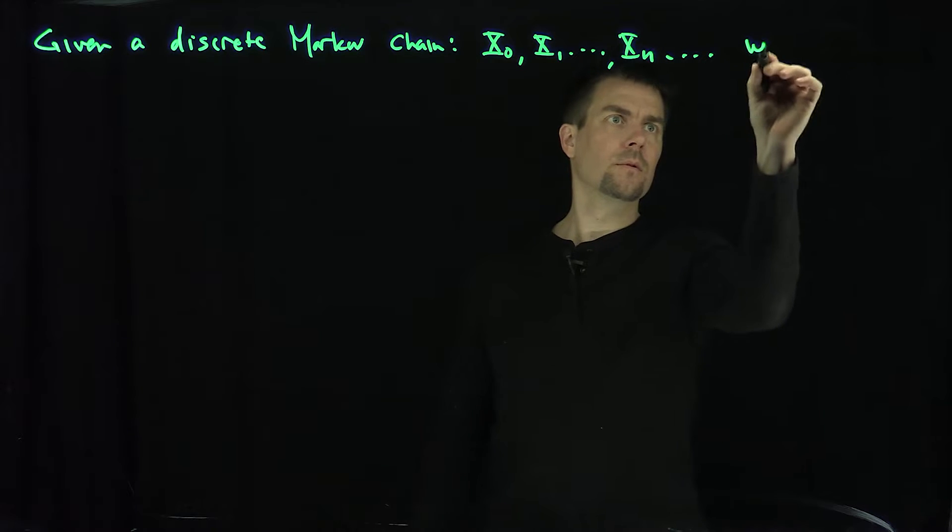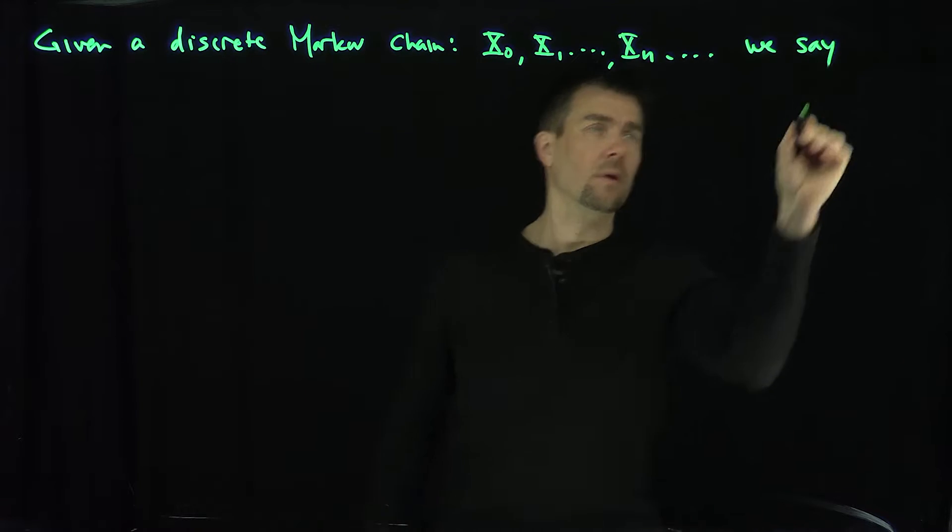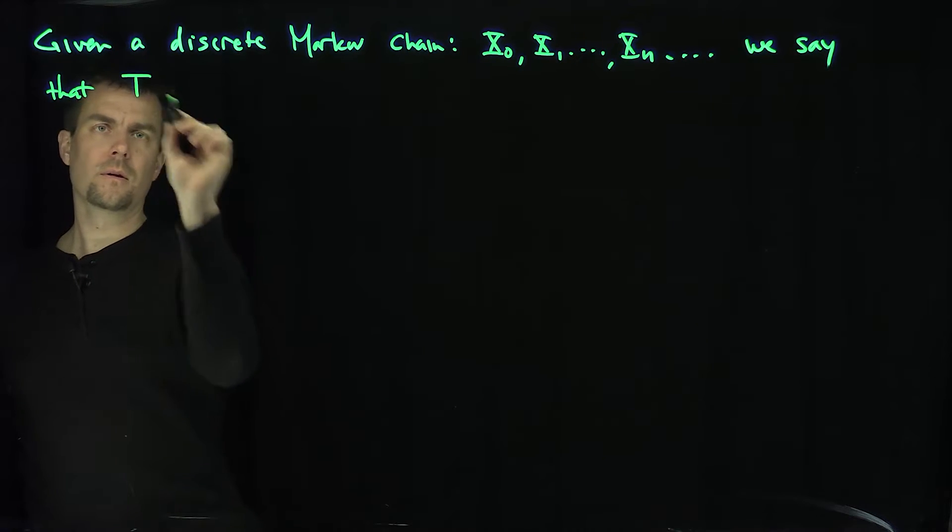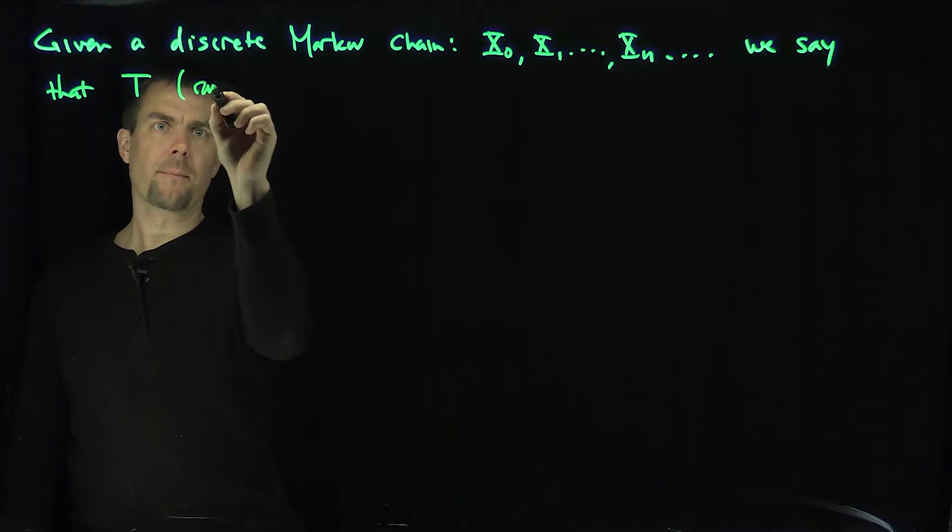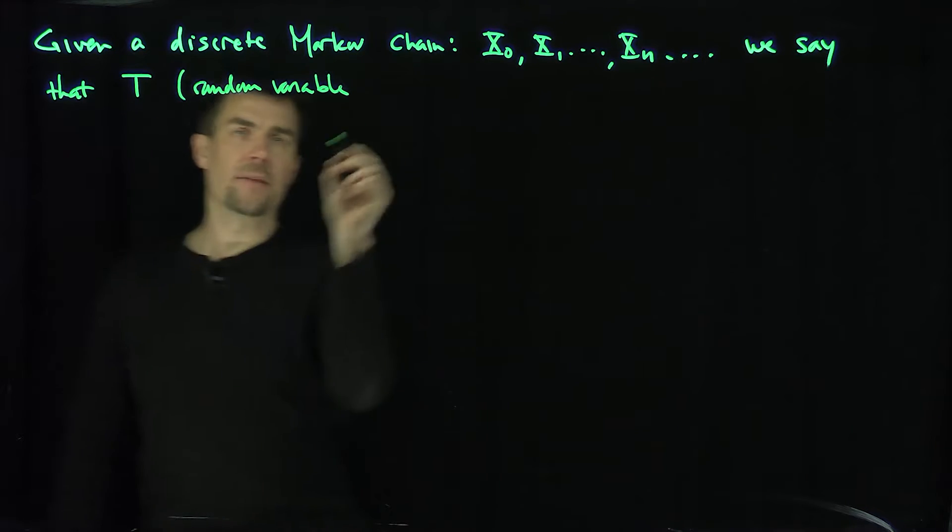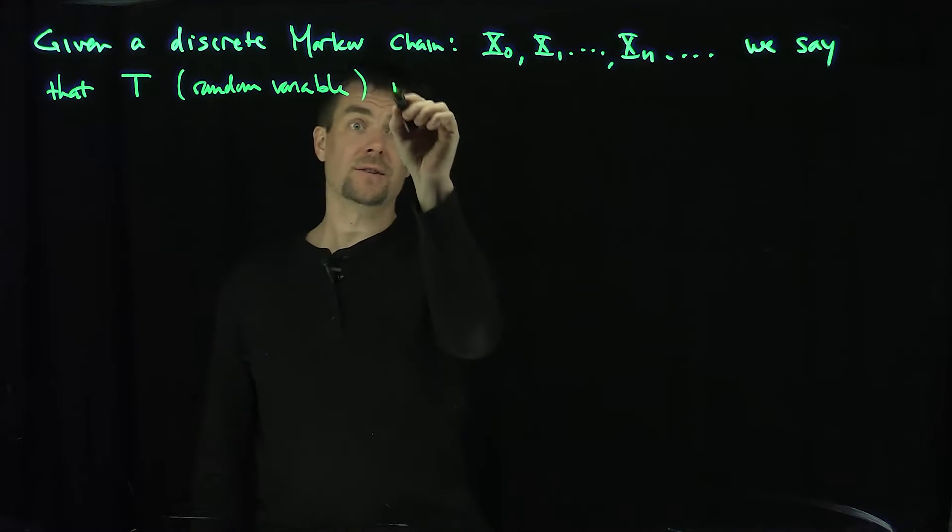And then we say that T, this is a random variable that outputs non-negative integers, is a stopping time.